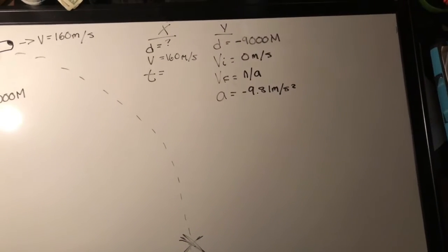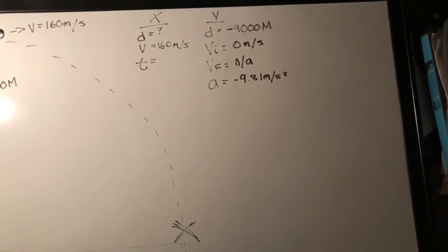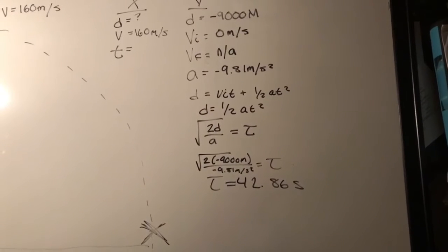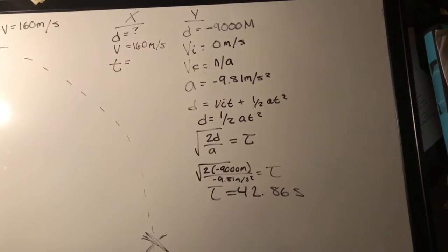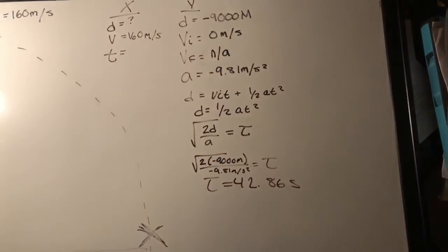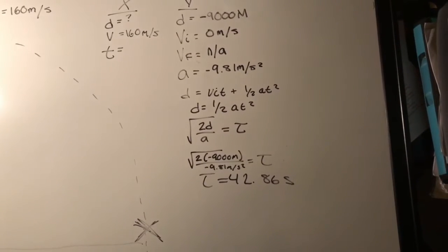So to have a formula that has all of these variables, we can use d equals vit plus 1 half at squared. What you can do next is derive a simpler equation from the original, which ends up to be t equals rad 2d over a. And when you plug in your variables for d and a, the answer for time is 42.86 seconds.